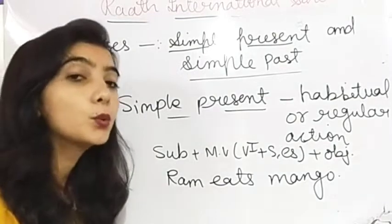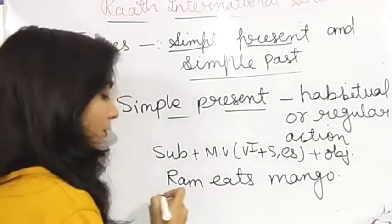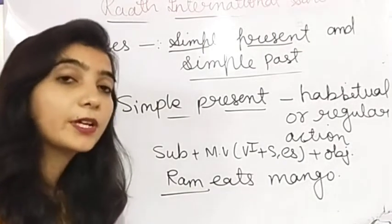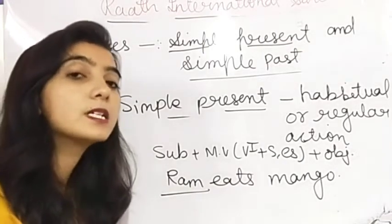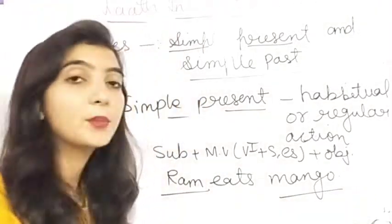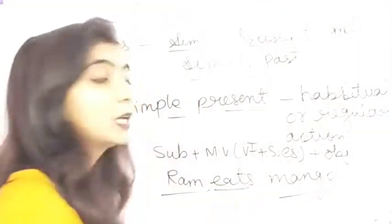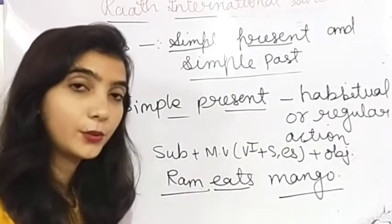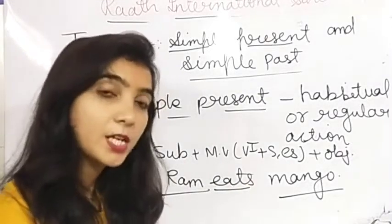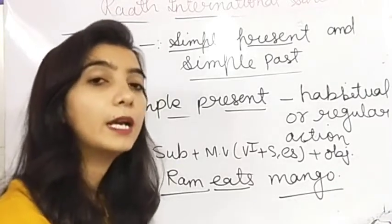We identify the subject by asking 'who' — who eats mango? Ram. The subject is Ram. We identify the object by asking 'what' — what does Ram eat? Mango. As you can see, the main verb uses S with it. Now we are going to learn where to use verb first form, where to add ES, and where to add S.